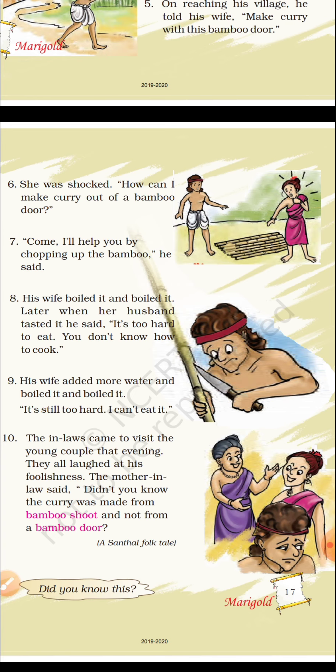Seventh point: 'Come, I will help you by chopping up the bamboo,' he said. The bridegroom told his wife that he would help her by chopping the bamboo door into pieces.